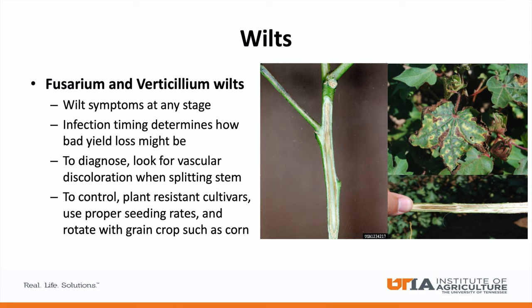Fusarium and Verticillium wilt symptoms can be present at any stage throughout the growing season. Infection timing will determine impact to yield, with earlier infections becoming more damaging over time. Wilt symptoms can first look like necrotic damage around the margins of the leaves that progressively moves inward. Cutting the stem and looking for vascular discoloration is needed to diagnose Fusarium and Verticillium wilts. Planting resistant cultivars and always using correct seeding rates can help mitigate the spread or infection of wilt diseases. In fields prone to infections, rotating out of cotton into a grain crop such as corn can help reduce infection potential in later years.